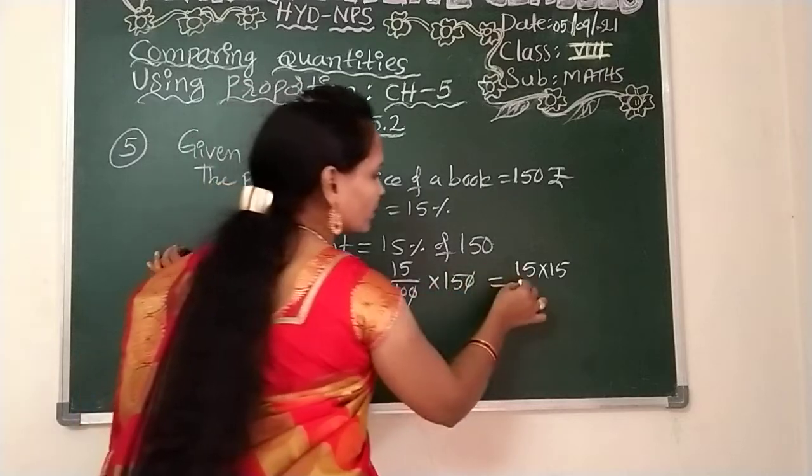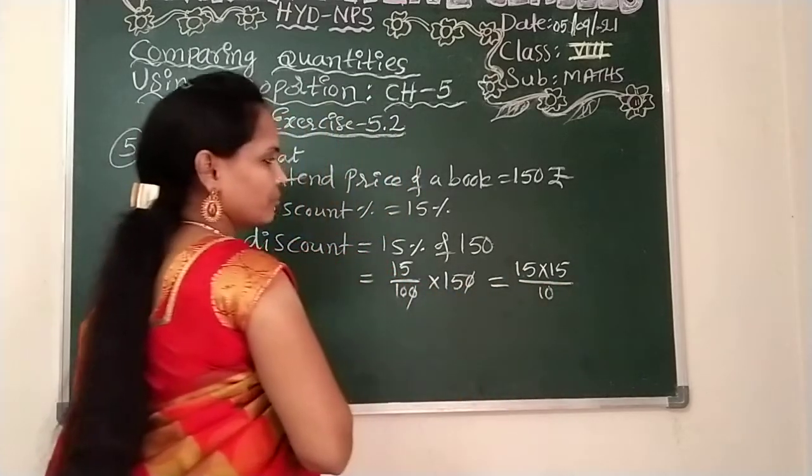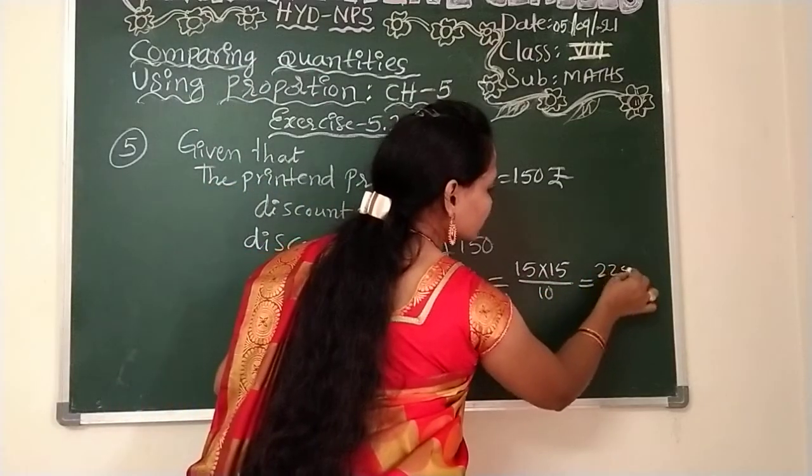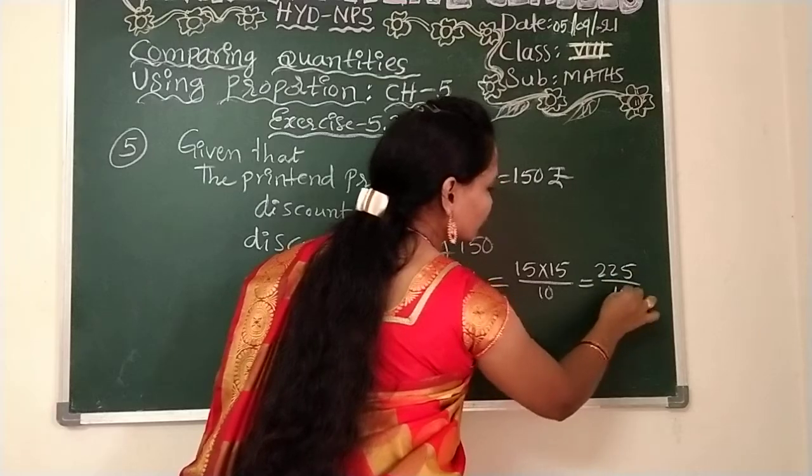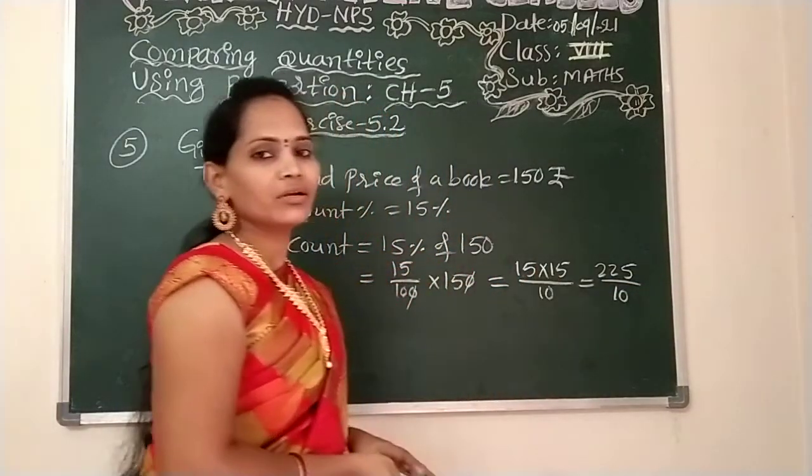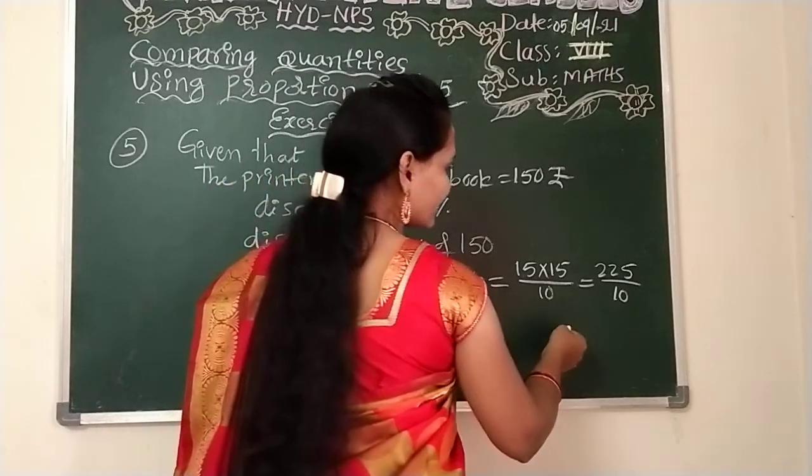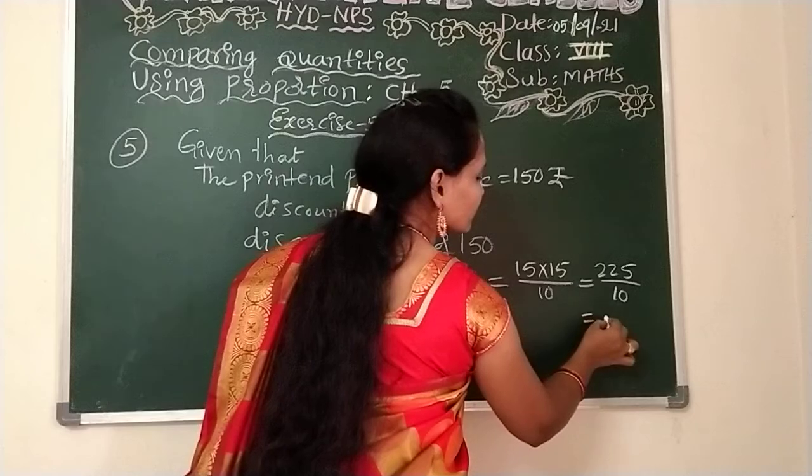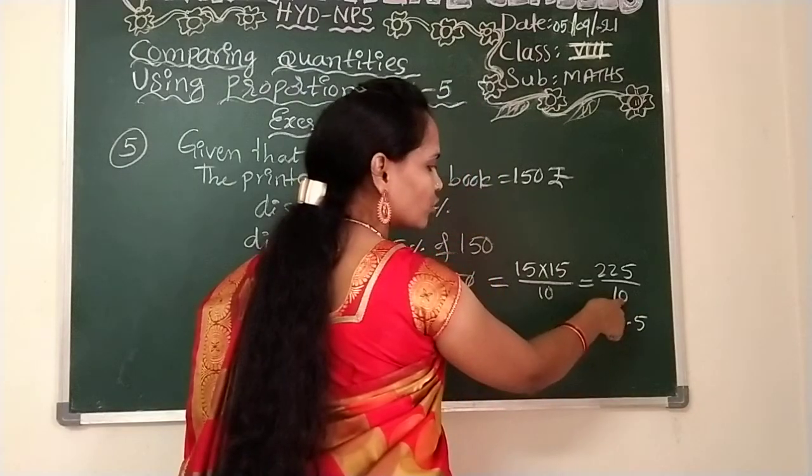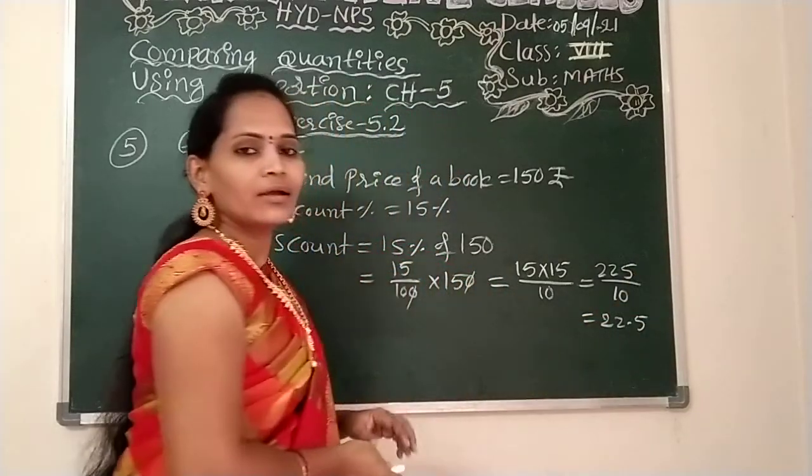15 into 15 divided by remaining number, denominator 10 is there. If you multiply 15 into 15 you will get 225. If you have any doubt you can do the multiplication. 15 into 15, you will get 225. Here, 1 zero is there in the denominator.